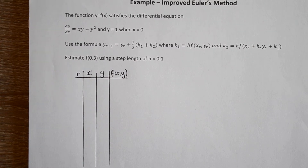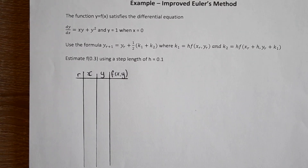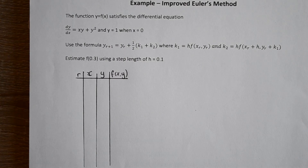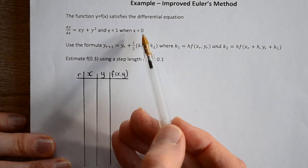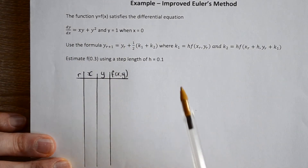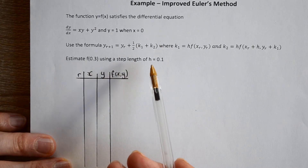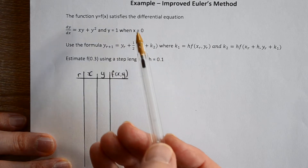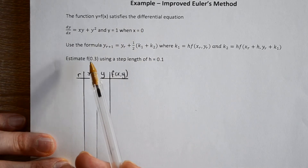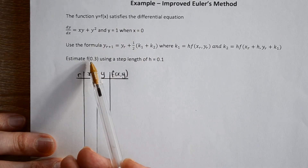Let's have a look at this example using Euler's improved method. Key elements are we've got a differential equation, we've got our point that we know, and we are using a step length of 0.1. X starts at zero, so this will take three steps to get up to our end point.